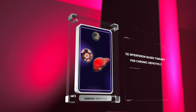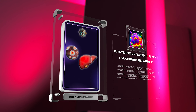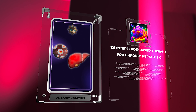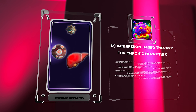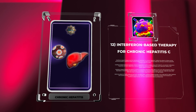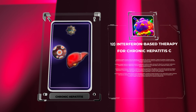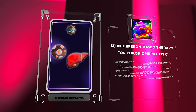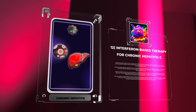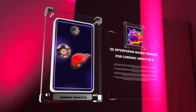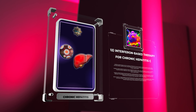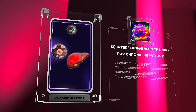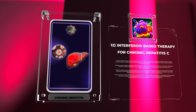Interferon-based therapy was the mainstay of treatment for chronic hepatitis C before the advent of direct-acting antivirals. Interferons exert antiviral effects and modulate the immune response, aiming to achieve sustained virologic response. Interferon-based regimens typically consist of pegylated interferon alpha along with ribavirin, an antiviral medication. Treatment duration depends on various factors including the HCV genotype, prior treatment history, and patient-specific factors.